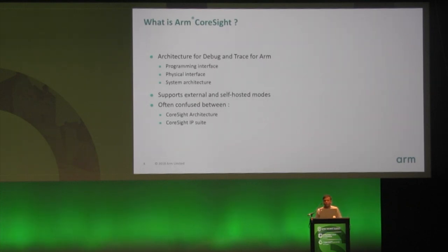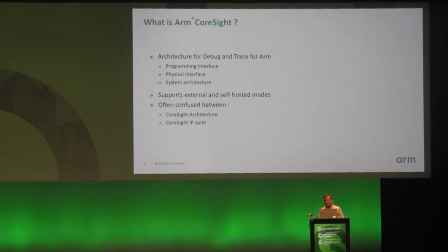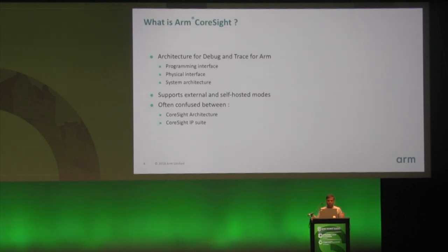So what is ARM CoreSight? CoreSight is a term often confused between different technologies. ARM CoreSight is an architecture for debug and trace on ARM architecture CPUs, and it covers all profiles of CPUs complying to the ARM architecture — the A class, R and M class. It is a form of architecture that defines physical interfaces, programming interfaces, and the system architecture.